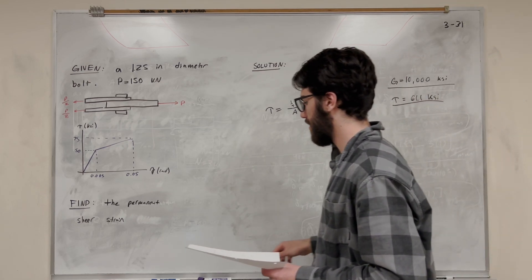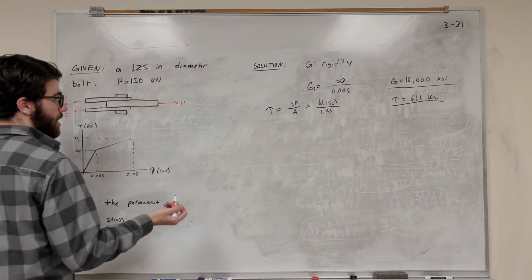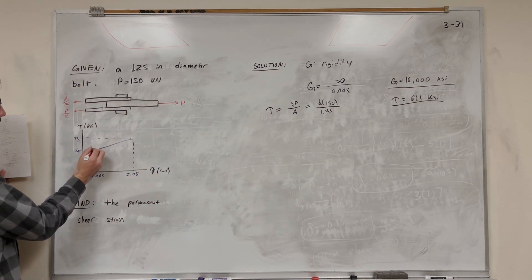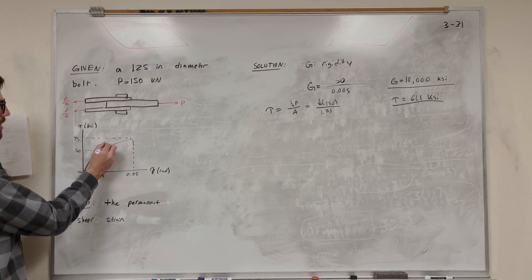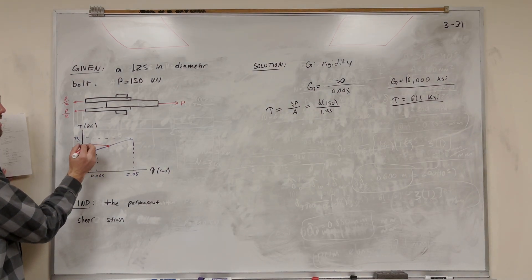Now what does that mean? Well, we're looking at our graph here. We know the elastic region ends at 50. So we're going to be past that. We're going to be somewhere in this region. So this is 61.1.